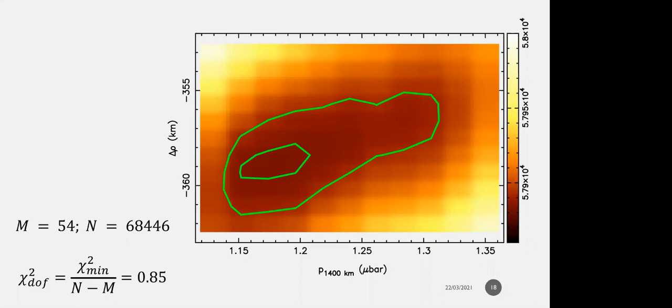With the 52 light curves, we can do a chi square map. The inner green line is the one sigma limits and the outer is the three sigma limits of the fit. The goal is to get global properties of the atmosphere, in particular the pressure at 1400 kilometers and the location of the shadow center with respect to the occultation chords without considering central flashes. We refeed the center into the Abel inversion to refine the iteration. This provides a satisfactory fit with 54 fitted parameters, almost 70,000 data points, giving a chi square per degree of freedom of 85%.